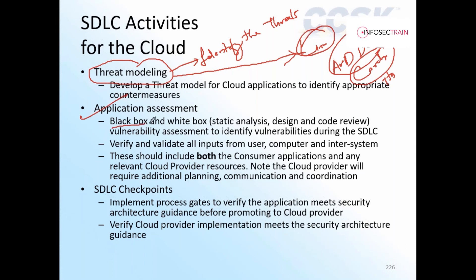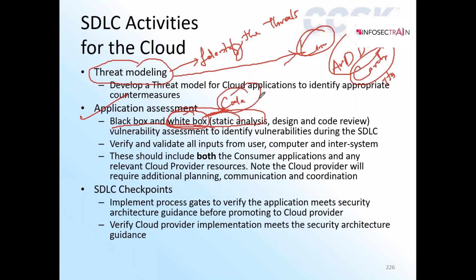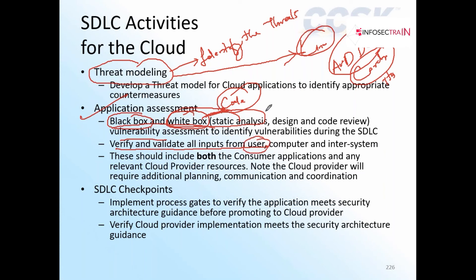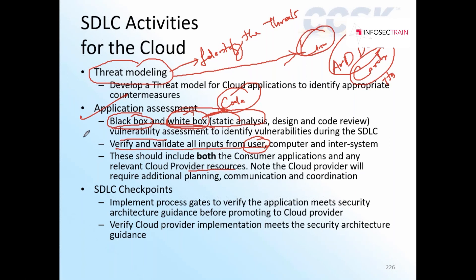The second thing is assessing the application. We have two terms: white box and black box. White box, or static analysis, means testing the code — checking if the code is functional. Black box testing means testing the complete application from the perspective of an attacker. Vulnerability means a weak point. You must verify and validate all inputs. Examples of attacks due to improper input validation include SQL injection and cross-site scripting. These assessments should include both consumer policies and cloud provider sources.